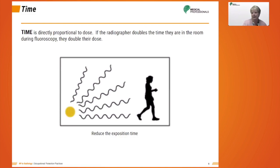Time is important. For most examinations, the radiographer is not in the room while x-ray production is activated. However, exams like OR procedures, fluoroscopy procedures, and some mobile imaging require the technologist be in the room during the radiographic study. When possible, the radiographer should decrease the time they are in the room. Time is directly proportional to dose — if the time spent in the room during active radiation production is doubled, the dose received is doubled. Likewise, if the time is cut in half, the dose is cut in half.